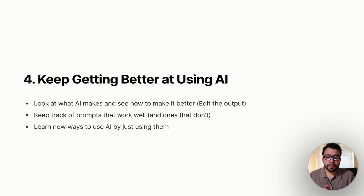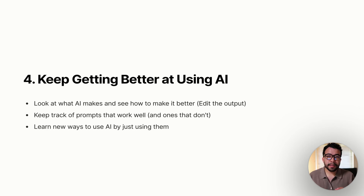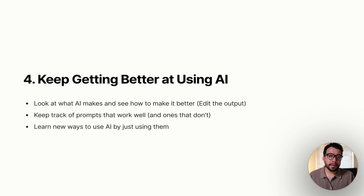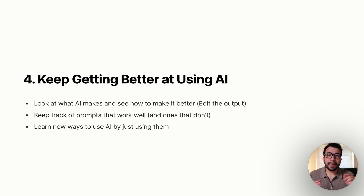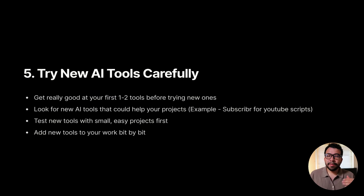You can continue learning new ways to use AI, but don't get overwhelmed trying every single tool. The first thing you want to do is get one or two tools, become a master at those, and then once you've leveraged them, try another tool that can help in another part of your business. For example, there's a YouTube tool I use sometimes called Subscriber — it has a YouTube script outlining process with research built in. I started using that only after I learned how to use Claude, ChatGPT, and Canva's AI tools. Take action instead of overwhelming yourself.